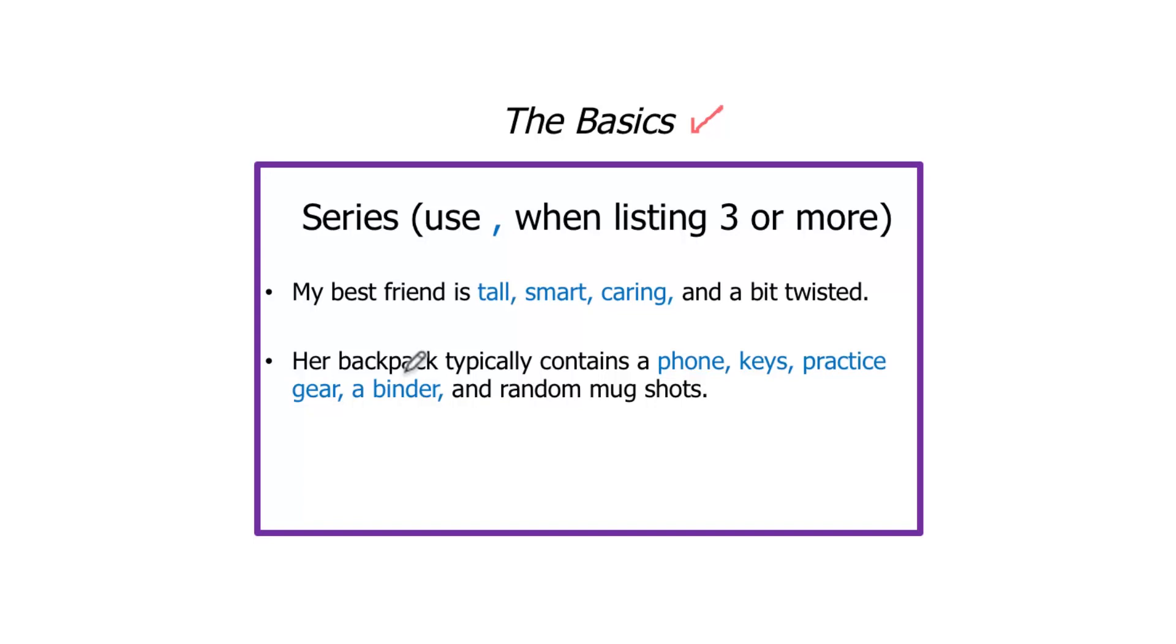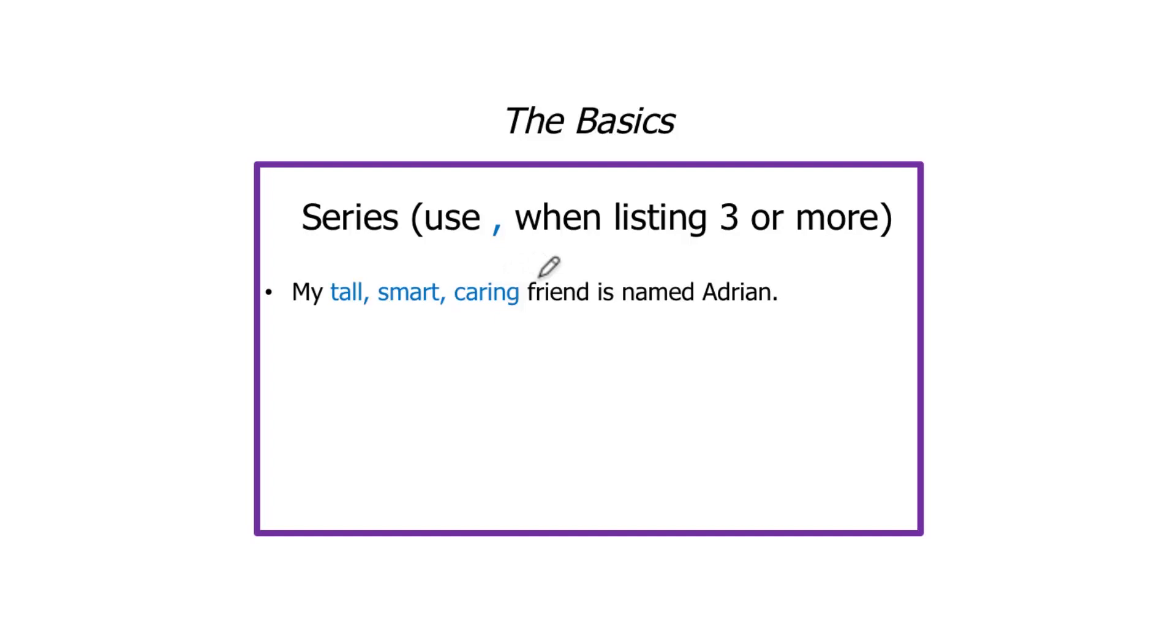She taught her dog how to beg for change, catch a Frisbee, and play dead. Three basic things we're looking at. Commas in between each of these behaviors. Also notice here that when we have our adjectives right before a noun, we don't have a comma between the last adjective and the noun.